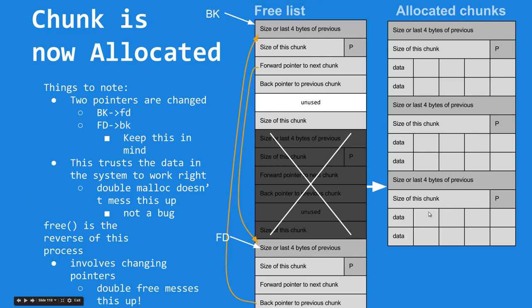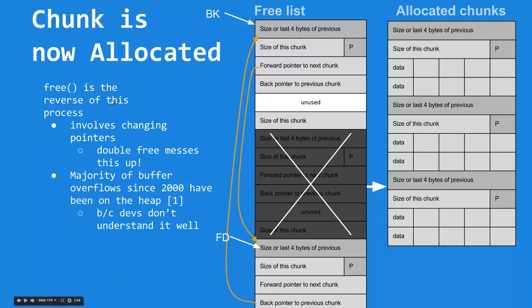Free is kind of the reverse of this process. It finds the forward pointer and the backward pointer of the adjacent chunks, redirects it to put this back into the free list, and ties these pointers to point forward and backwards correspondingly. Double free, which we'll cover in a little bit, messes up this process, and it is sometimes exploitable. This is very important to understand, because the majority of buffer overflows have been on the heap since the mid-2000s. And devs just don't understand it very well, so it kind of goes more uncaught than stack-based exploitation or stack-based buffer overflows.